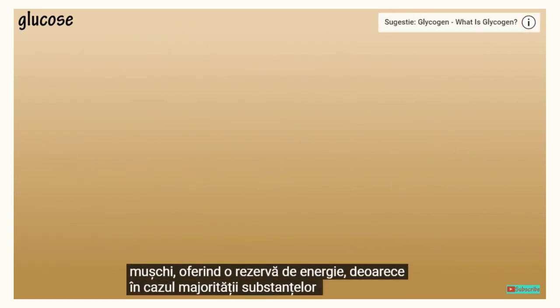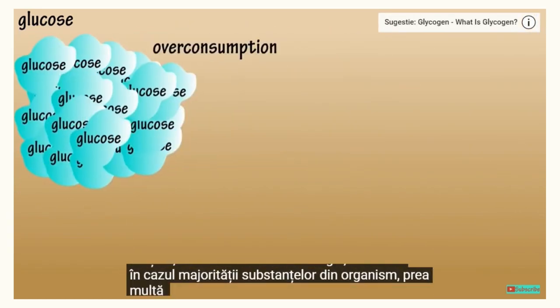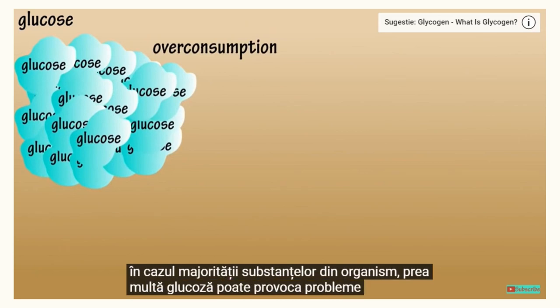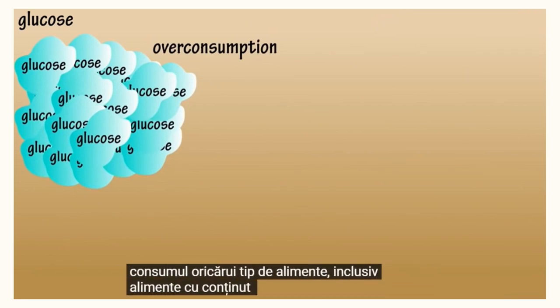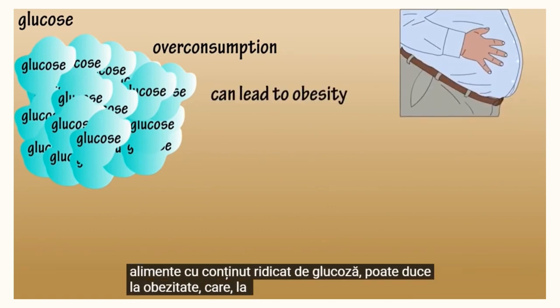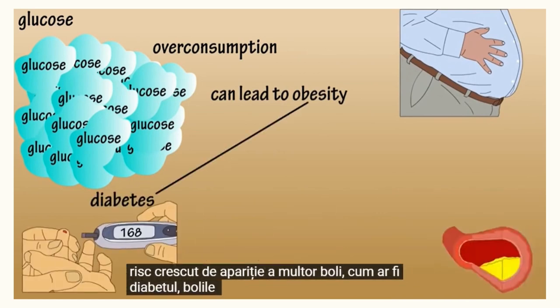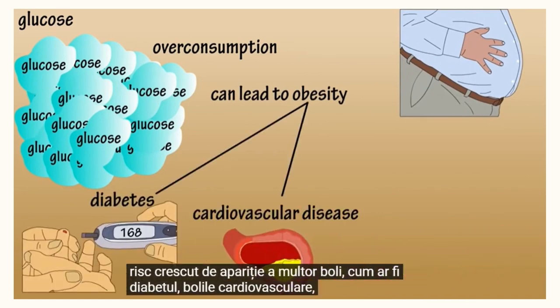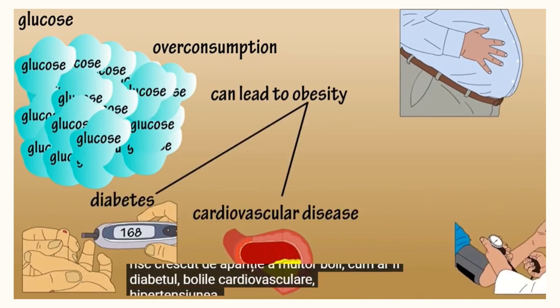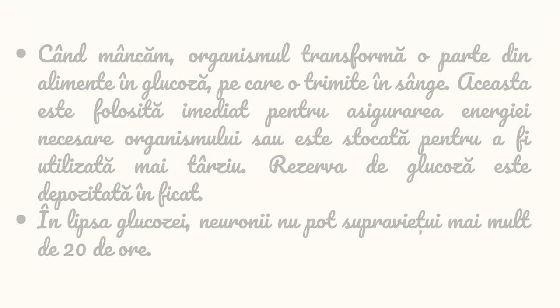As with most substances in the body, too much glucose can cause problems. Overconsuming any type of food, including foods with high glucose content, can lead to obesity, which in turn can lead to an increased risk of many diseases, such as diabetes, cardiovascular disease, high blood pressure, and even respiratory issues.